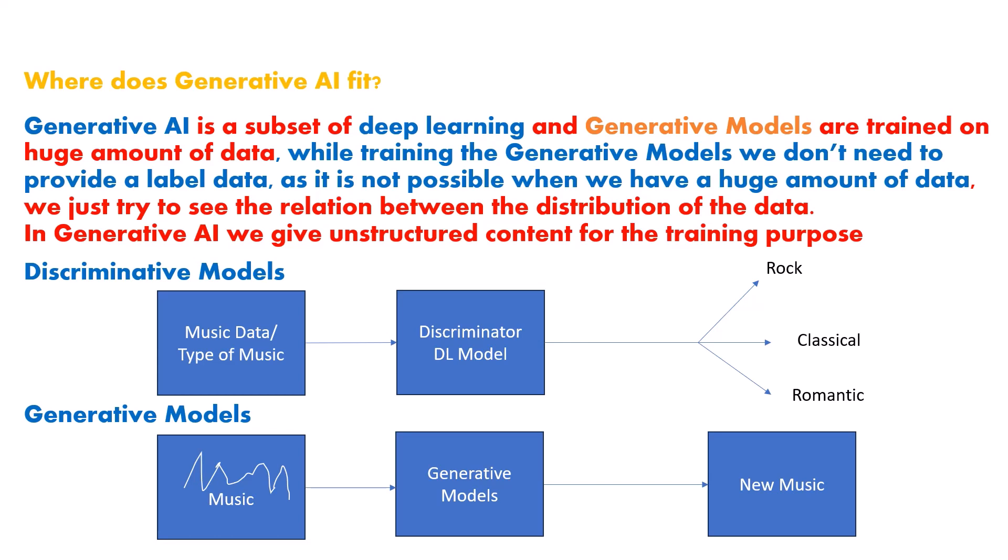When we talk about generative AI, it means we are creating some new data. When we talk about discriminative models, it means we are doing classification or prediction. In generative models or generative AI, we create new data — either in the form of text, audio, images, or video frames.